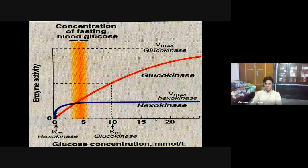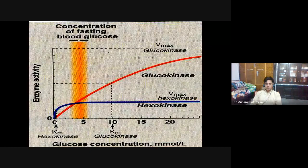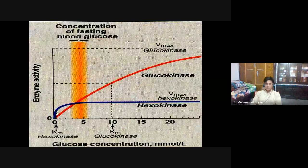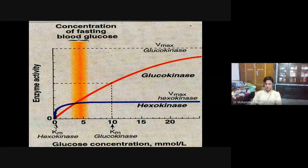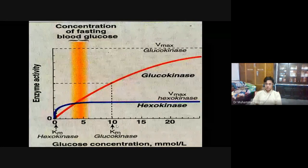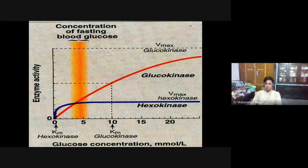Hexokinase has a low KM value of around 0.1, while glucokinase has a very high KM value. KM is determined by taking half of the maximum velocity and finding the corresponding substrate concentration on the graph. A low KM means the enzyme achieves half-maximum velocity at a very low glucose concentration — indicating high affinity. For glucokinase, 10 millimolar glucose is required to achieve half-maximum velocity, indicating low affinity.